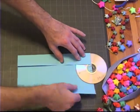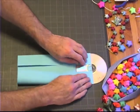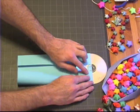Then we're going to take the other side and fold that in, again going right up to the disc and then backing off just a hair.